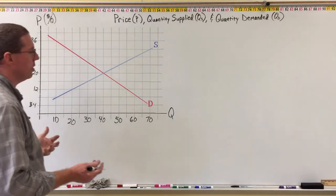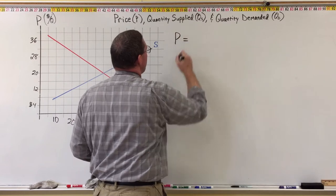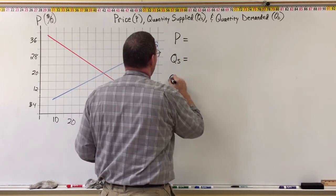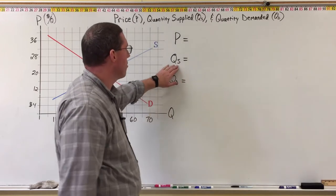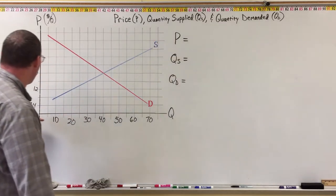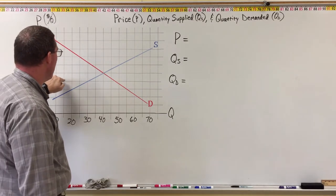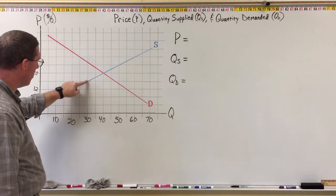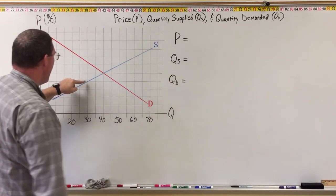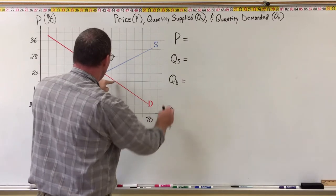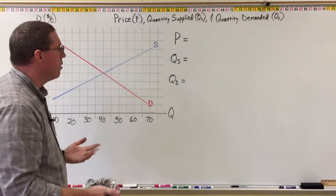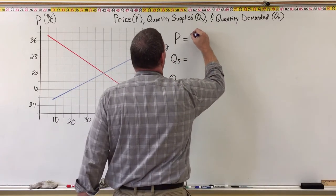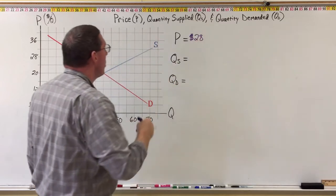I'm going to give you a price, and then you'll try to identify the quantity supplied and the quantity demanded. To find quantity supplied, when I give you a price you go across the price line to find where it hits the supply curve — that intersection is the quantity supplied. Where the price line hits the demand curve is the quantity demanded. Let's say the price is $28.